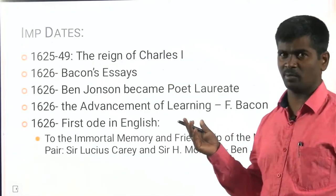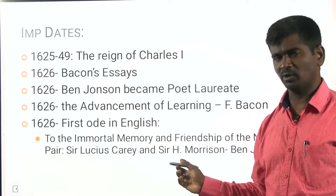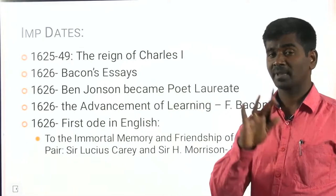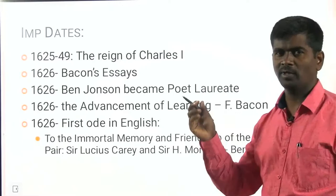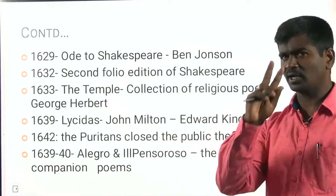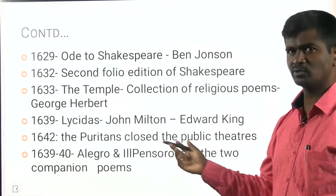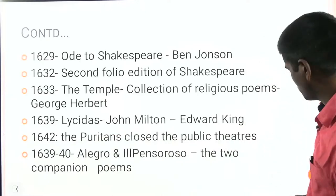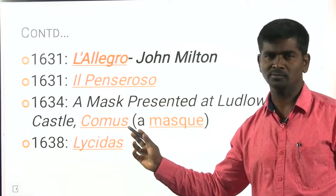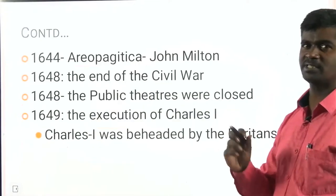During this period, the first ode written by Ben Johnson — 'To the Immortal Memory and Friendship of That Noble Pair, Sir Lucius Cary and Sir Henry Morison' — is considered the first greatest regular ode composed based on the styles of Pindar. Ode to Shakespeare was written in 1629, second folio edition of Shakespeare 1632. The Temple — A Collection of Religious Lyrics 1633. Lycidas, John Milton's pastoral elegy. Puritans closed theatres in 1642 — commonly asked bits. L'Allegro and Il Penseroso are companion poems, commonly asked in different competitive examinations. Comus is a popular masque, a court entertainment, specifically written by John Milton in 1634.